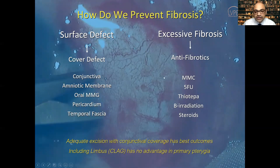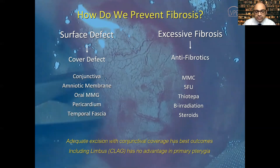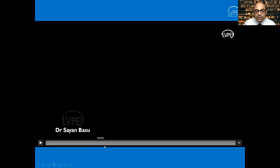Adding anti-fibrotics to the graft gives slightly better outcomes, but for primary pterygium it has been shown without much doubt that anti-fibrotics are not necessary — they are more useful for recurrent pterygium. If the defect is covered well, adjunctive anti-fibrotic treatment is really not necessary. True recurrence rates should only be calculated at one year or more from surgery — outcomes at one month or six weeks look great with almost any procedure.